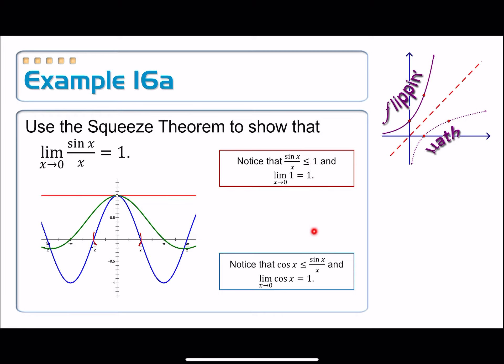So we have our inequality. We have both of our limits being equal to 1, then the squeeze theorem is supposed to give us the conclusion that the limit as x approaches 0 of sine x over x is equal to 1.